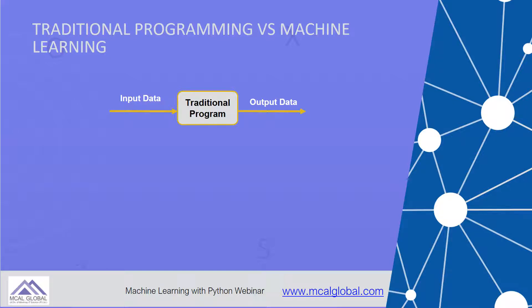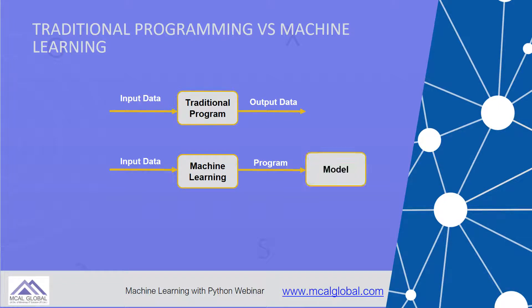But machine learning is different. It takes input data, starts analyzing that input data, extracts structures from it, and then gives as output a program — not data, but a program — also called the model. To this model you can give new input data, and the model can process data it has never seen before and give you output data. So machine learning is a framework wherein it can start learning from input data, which is nothing but experience, and create predictive models for you.